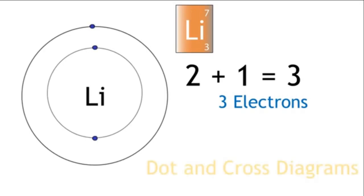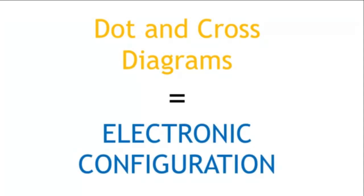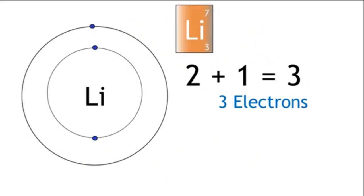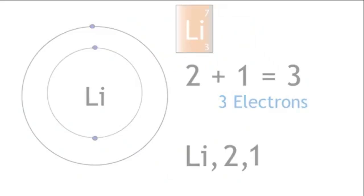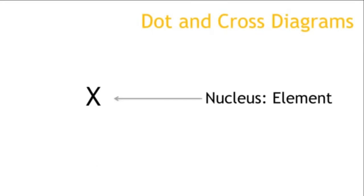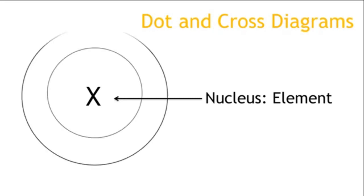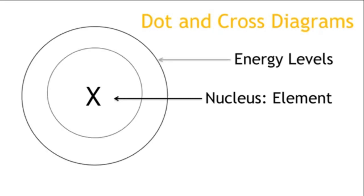These diagrams are called dot and cross diagrams, and they are used to show the electronic configuration of an element. You need to be able to draw these diagrams, as well as being able to write the electronic configuration in written form. For lithium, this will be written as Li, 2, 1. In the diagram, the nucleus is represented by the element symbol or a central black dot. The energy levels are represented by circles around the nucleus, and the electrons are represented by dots or crosses.